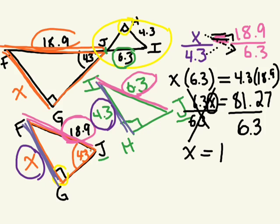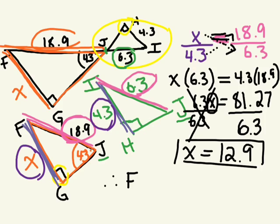12.9. So X is equal to 12.9. Therefore, side length FG, this one that we're trying to find, is equal to 12.9 units.